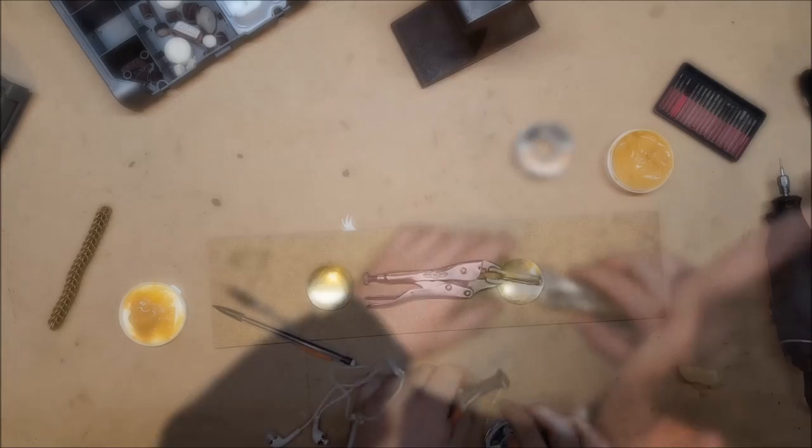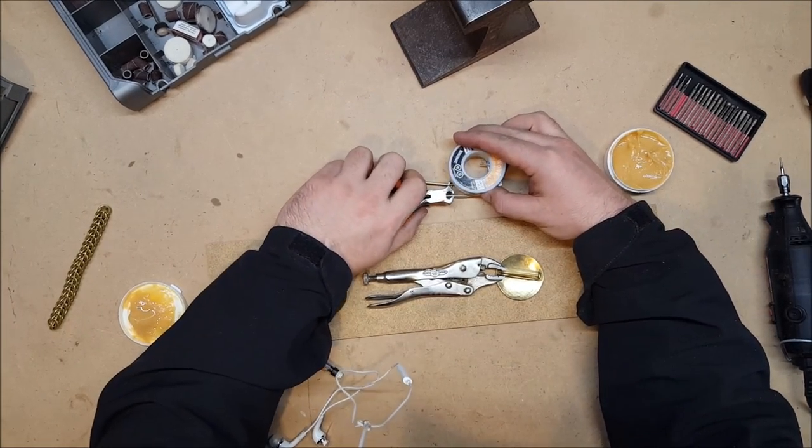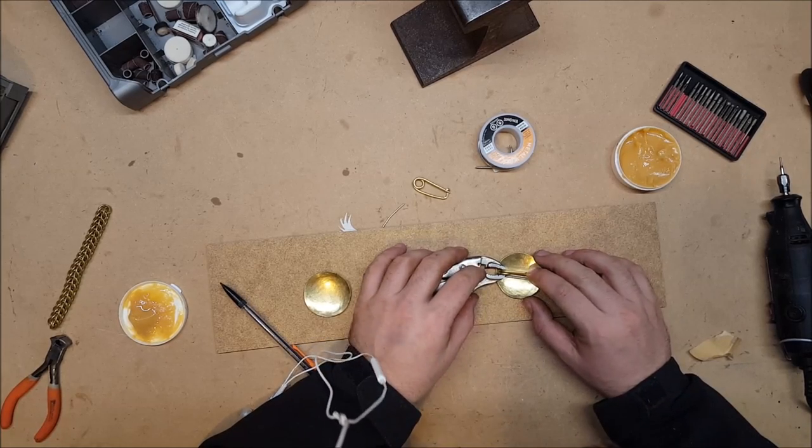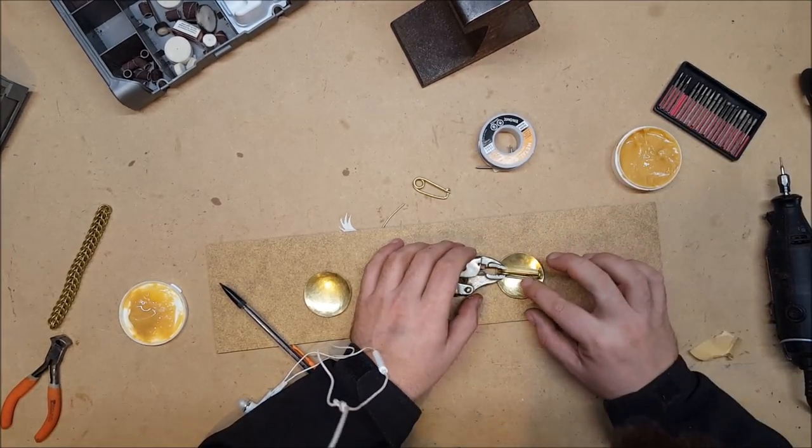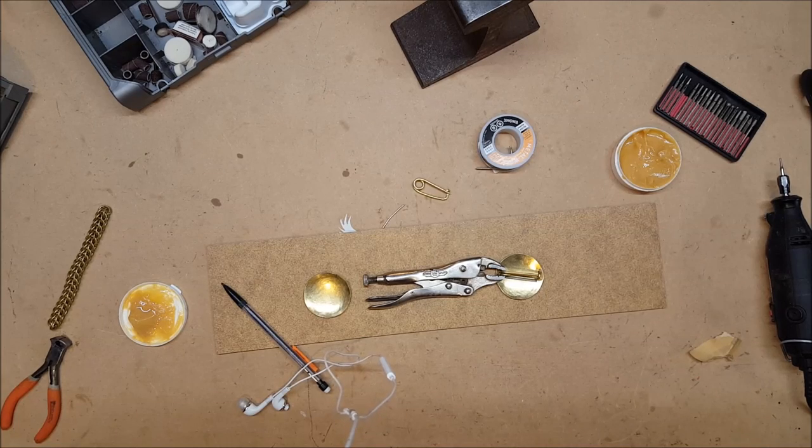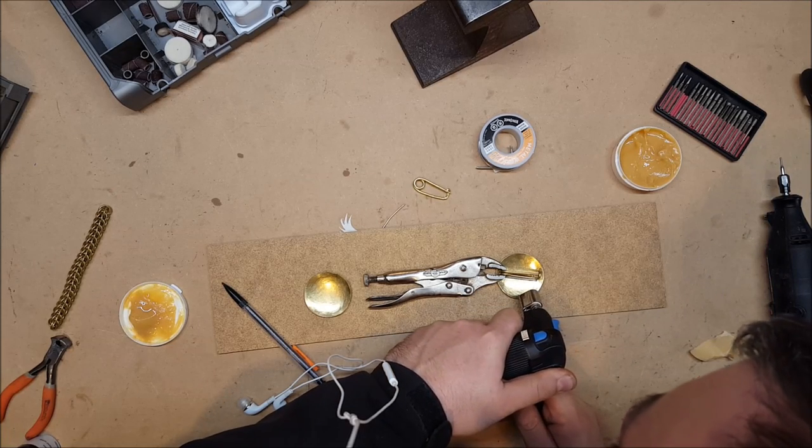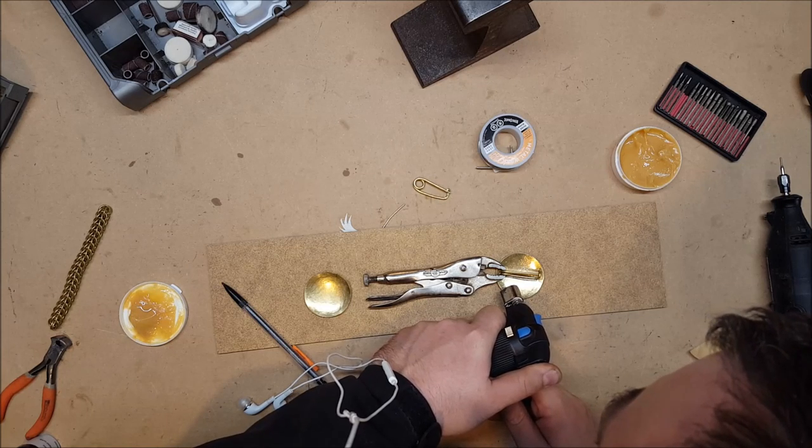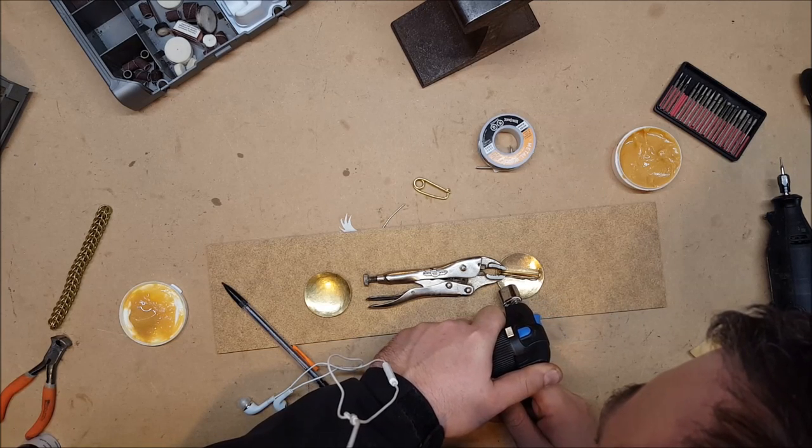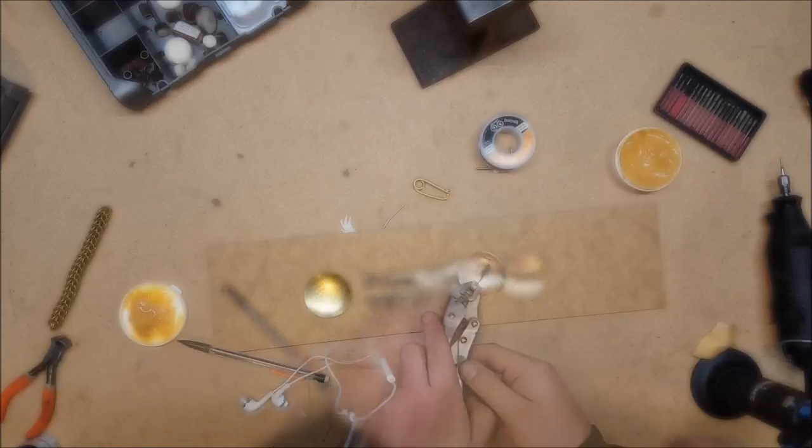We need a section of solder the length of the pin, put right where we want it to go. If all goes well, as soon as it hits its melting point, it will suck right into where we want it because flux is magical that way. One down, set it aside to cool.